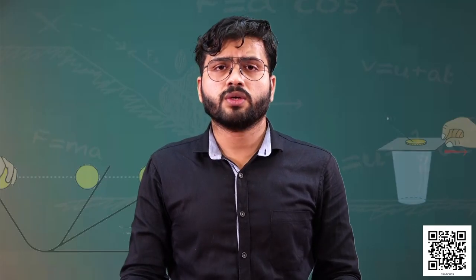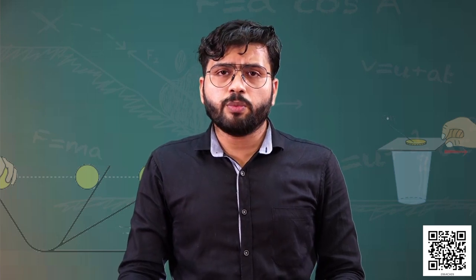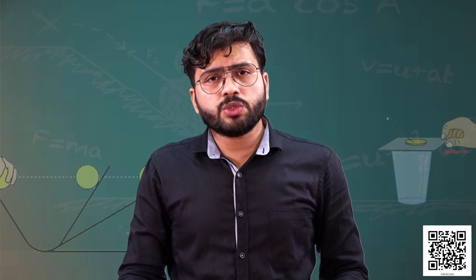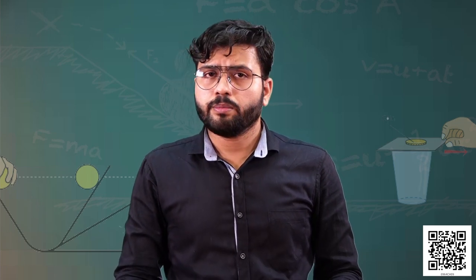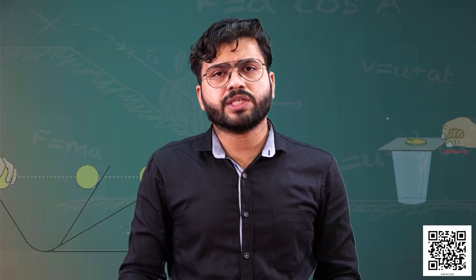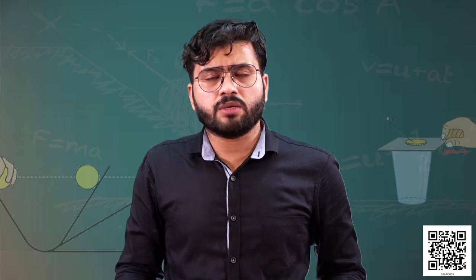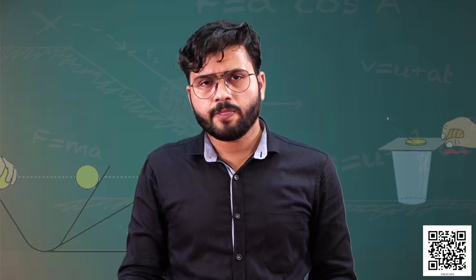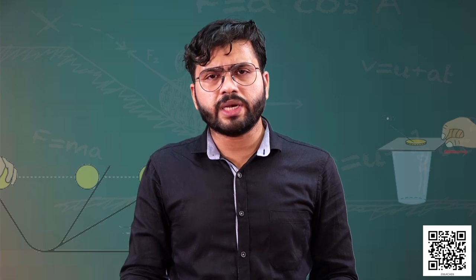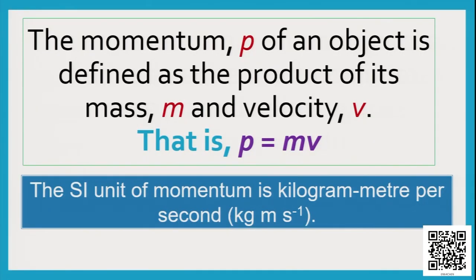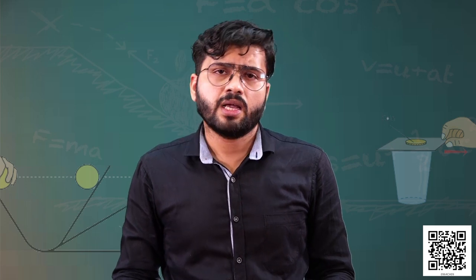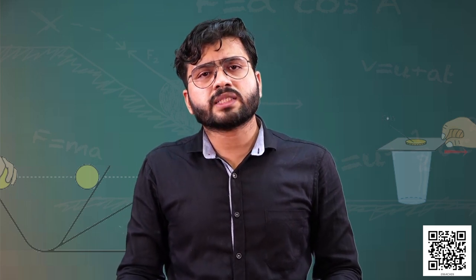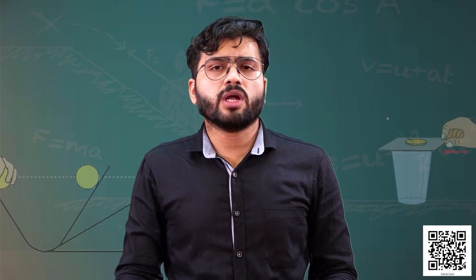Momentum is a vector quantity — it has both magnitude and direction. The direction of the momentum of an object is always in the direction of its velocity. The SI unit of momentum is kilogram meter per second (kg·m/s), because mass is in kilograms and velocity is in meters per second.